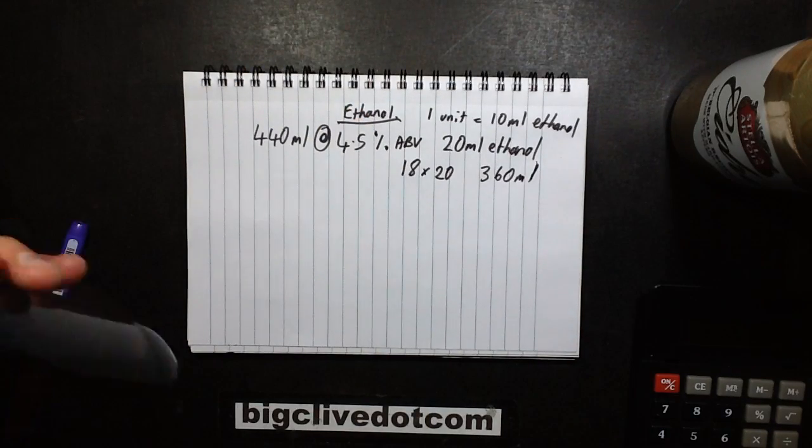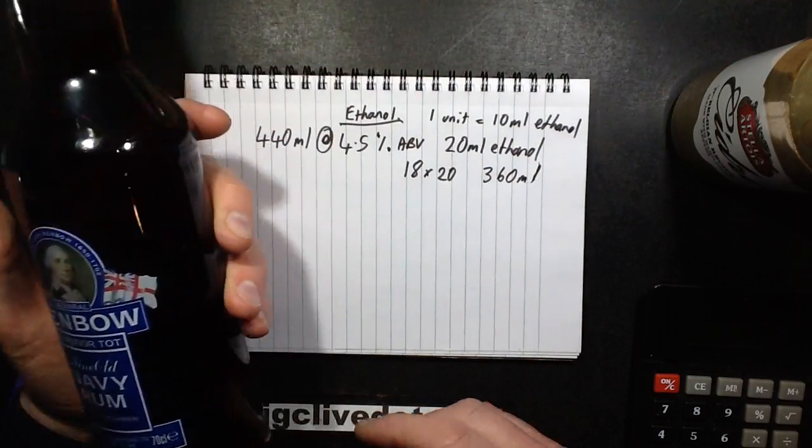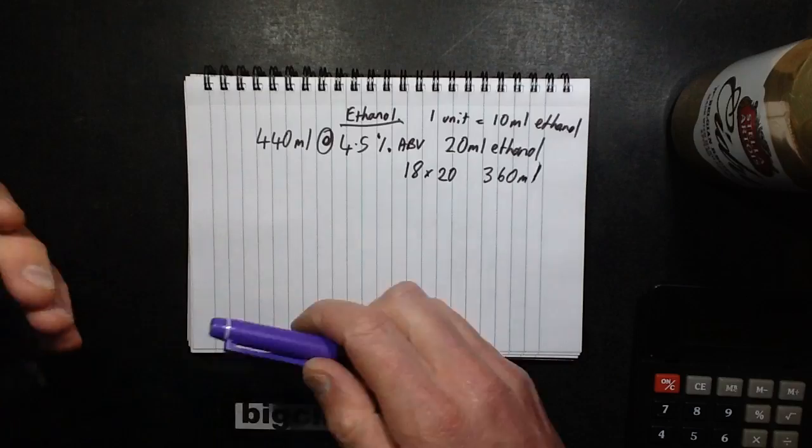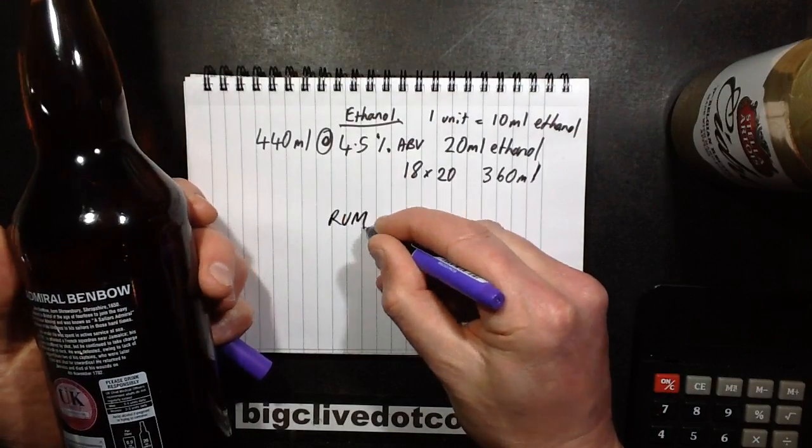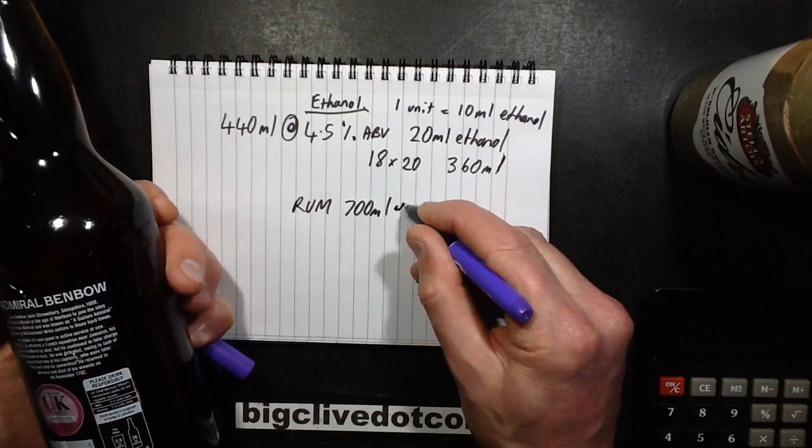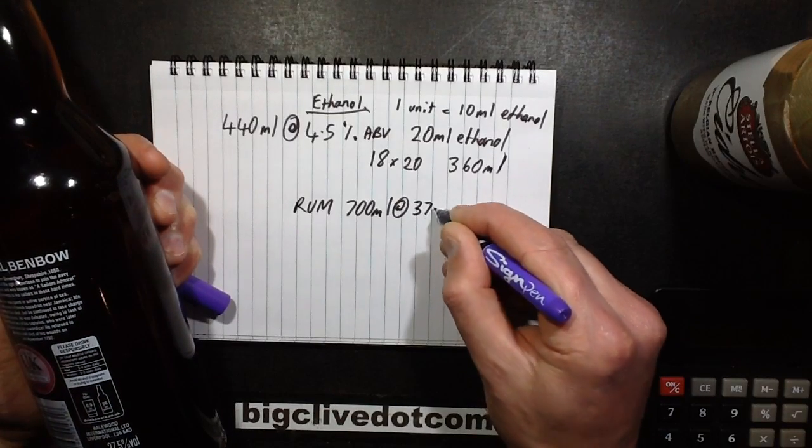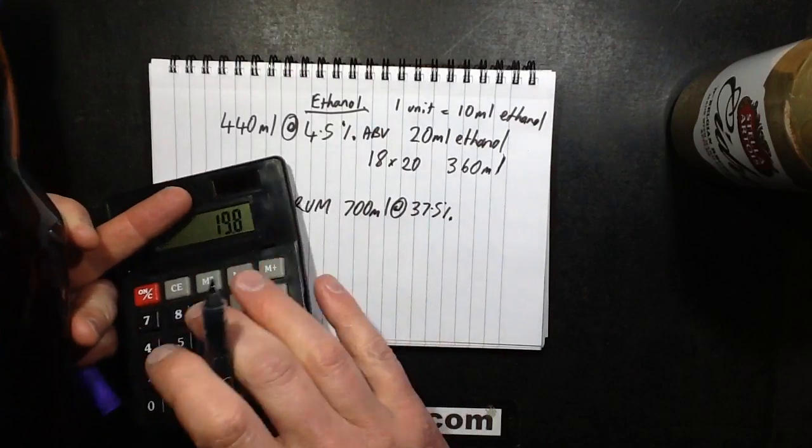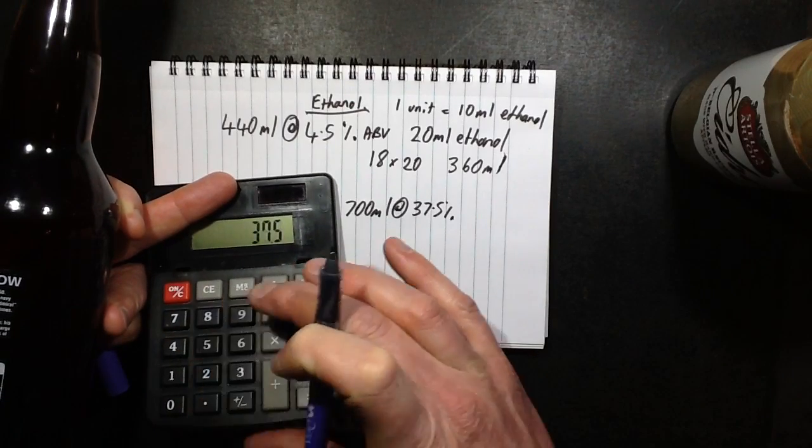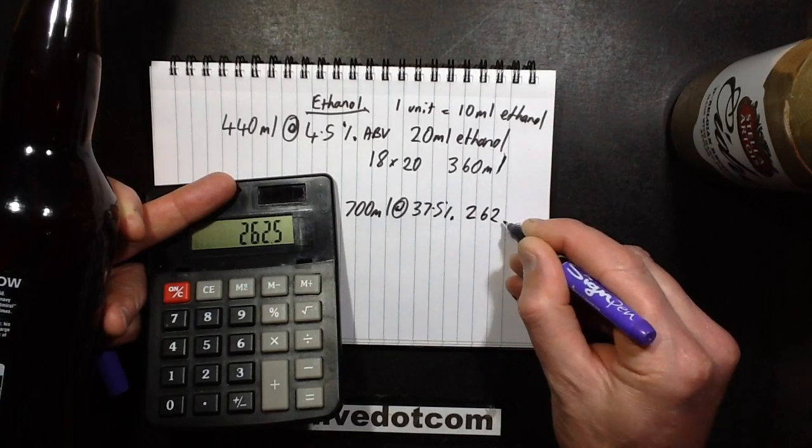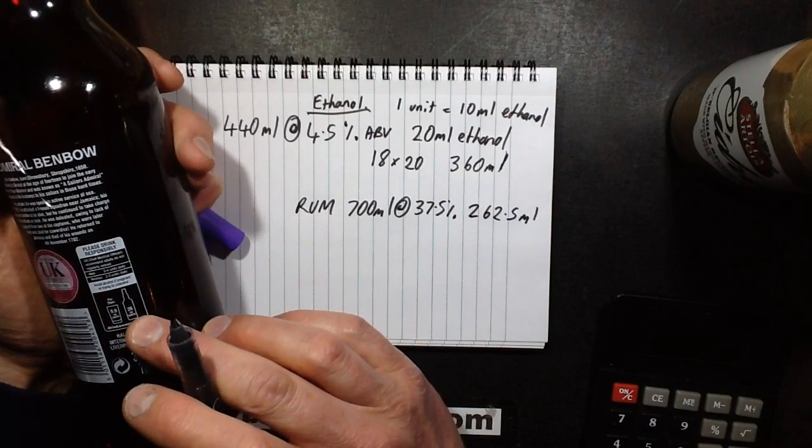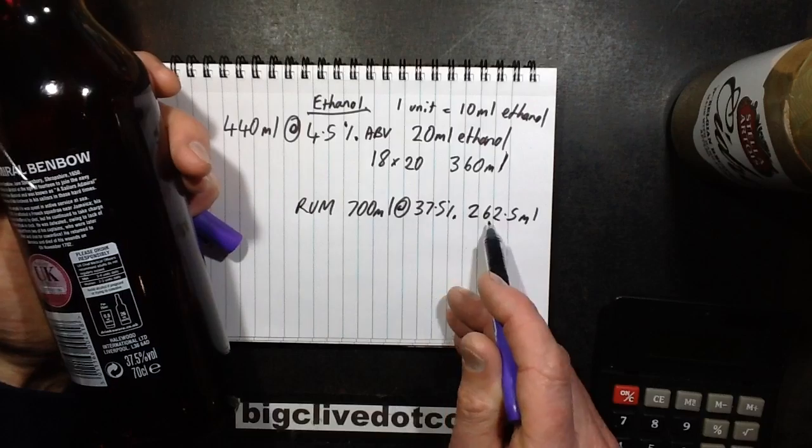But this also made me wonder. Here's my bottle of rum. So how much? This is apparently 28 units, 26 units in this, because it's 37.5% volume. It's 700ml. So let's do the maths. The rum is 700ml bottle, not that I'm planning on drinking this entire bottle. I will inevitably, but it's going to take a long time. And it's 37.5% volume. So you do the maths and it comes out at 700ml times 37.5% gives you 262.5ml. And interestingly enough, it says that this contains 26 units, which equates to the 10ml. So they're basing it on 260ml.